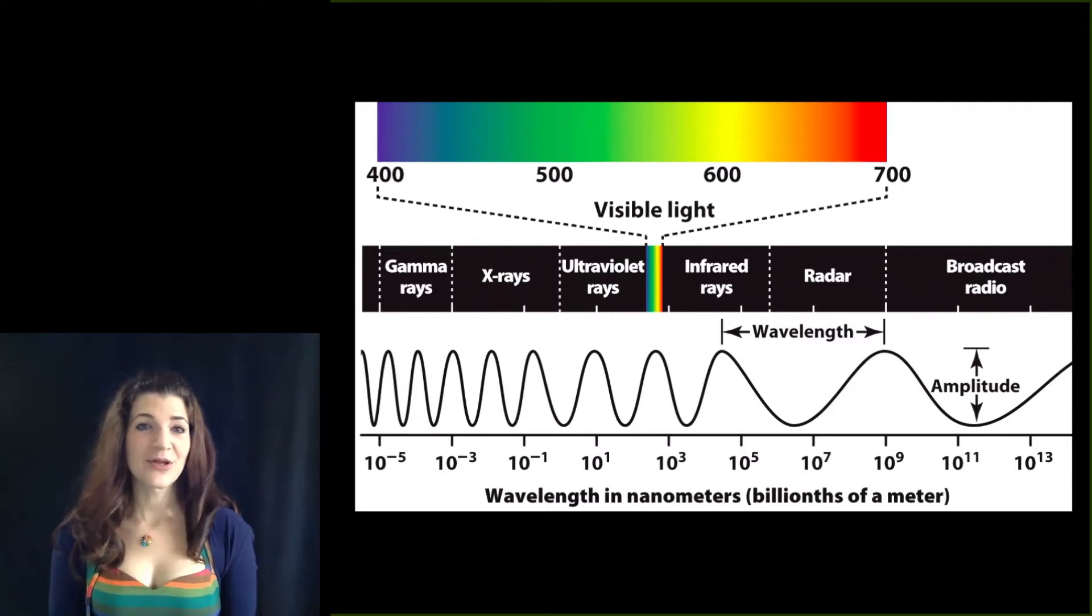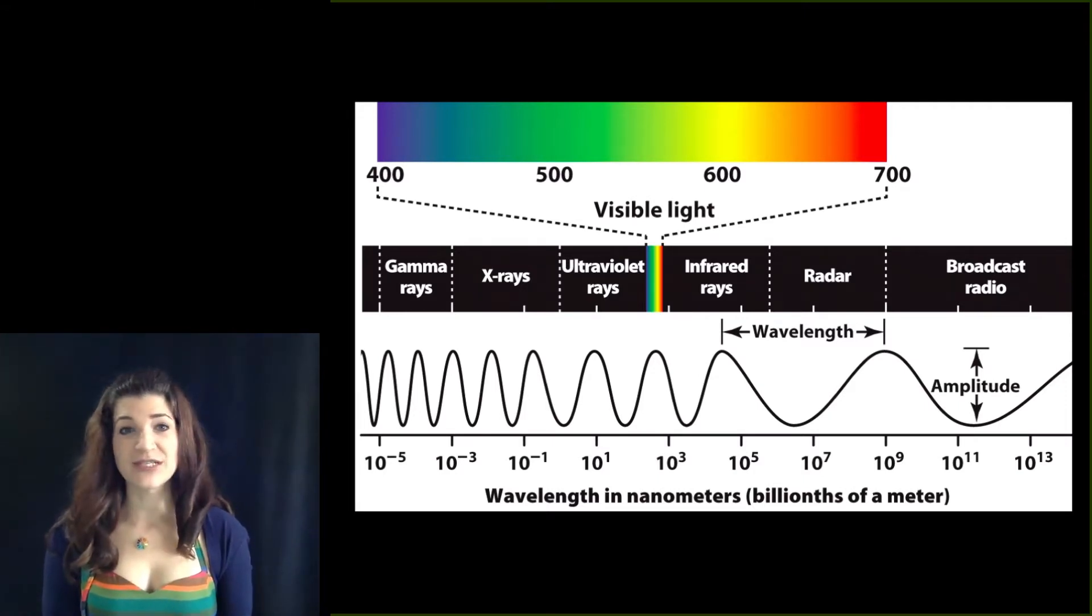Light that's about 400 nanometers we typically perceive as blue, and light nearer 700 nanometers we perceive as being red. That's a bit of an oversimplification, but it's a convenient oversimplification just for now.